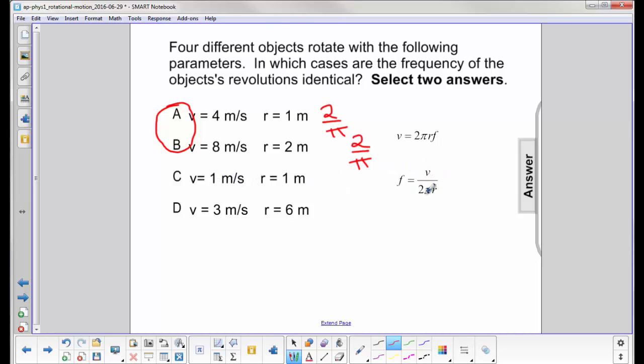it would be 1 over 2 times 1. So it's going to be π over 2. Okay, that doesn't work.